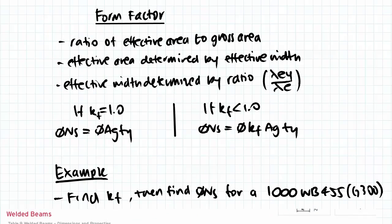So moving on, we're going to recap what form factor is. We're going to start at the bottom this time and look at what form factor is, working our way back. Form factor is a ratio of effective area to gross area, so kf equals ae over ag.